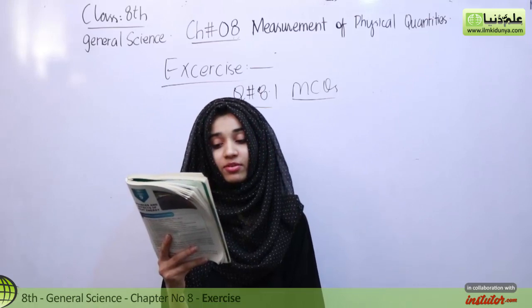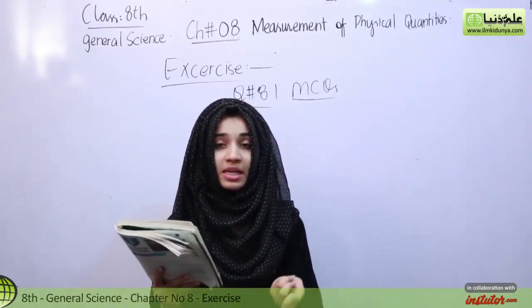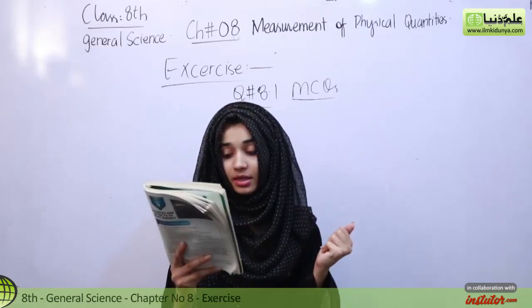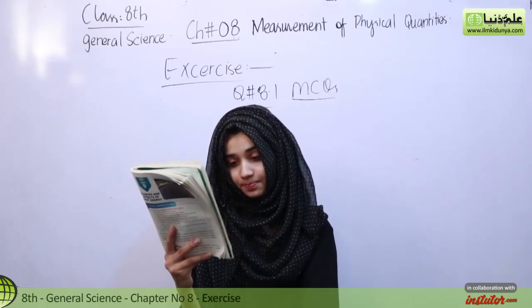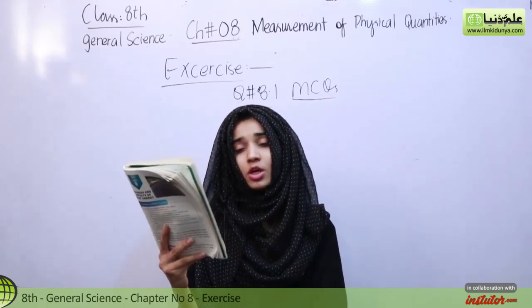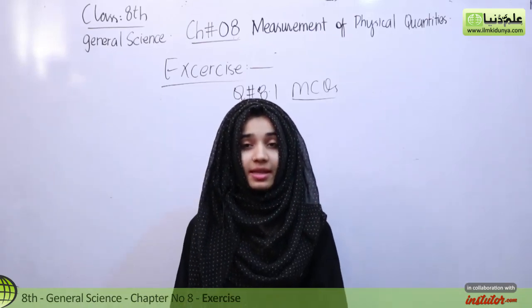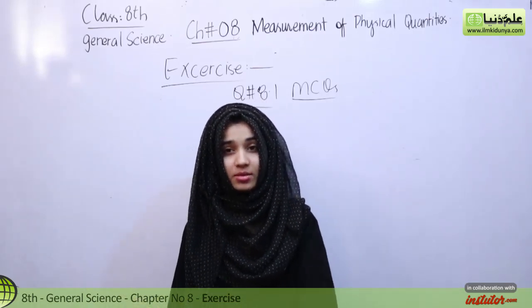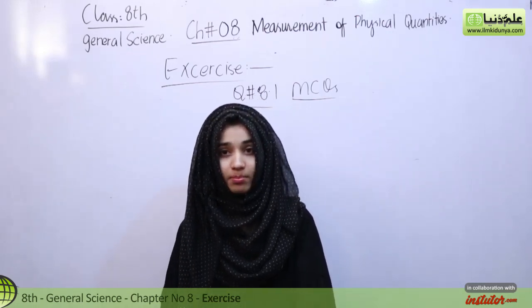Question number 2, define the term prefix. The words which are used before the unit are called prefixes, such as kilo and centi. Page number 115. What is meter rule? Topic 8.3.1. An instrument which is used to measure the length is called meter rule. It consists of 100 cm and each cm consists of 10 mm.